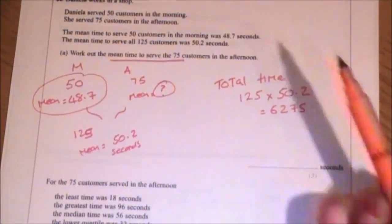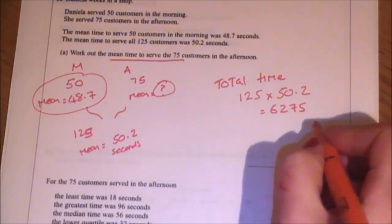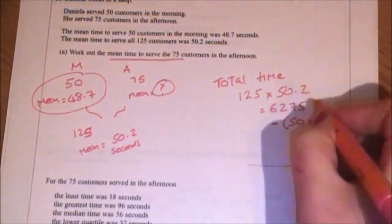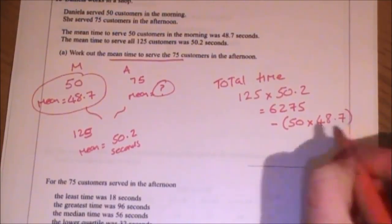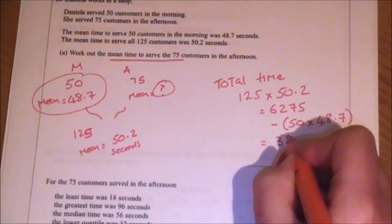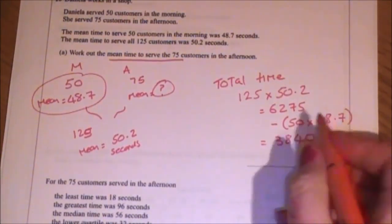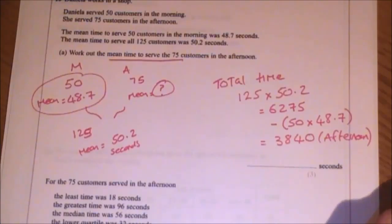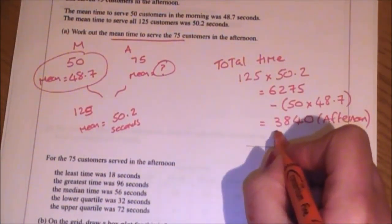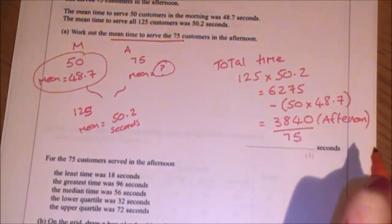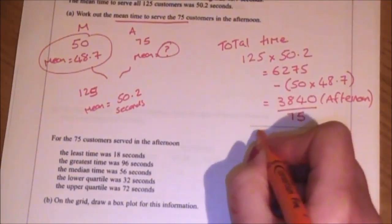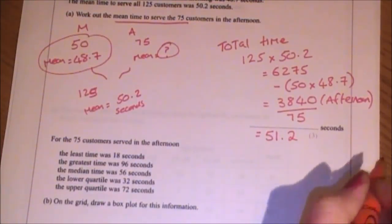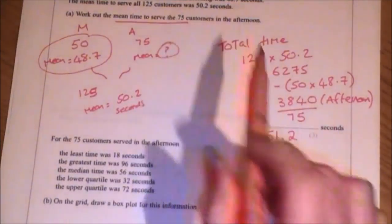Now, I know exactly how many of those are accounted for in the morning. So I can do 6,275, take away my 50 lots of 48.7 and that equals 3,840 seconds. So that has left me with the afternoon seconds of serving. And I know that that's going to be shared between the 75 customers that they had. So 3,840 divided by 75 equals a mean average time of 51.2 seconds. So on average, it took them 51.2 seconds per customer in the afternoon.